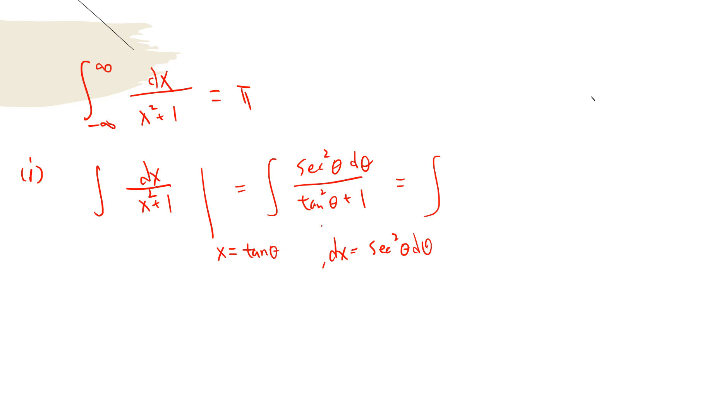So this is secant squared d theta. We do the infinity and minus infinity. When x is infinity, theta is π over 2, and when x is minus infinity, this is negative π over 2. So it's π over 2 minus negative π over 2, which equals π.